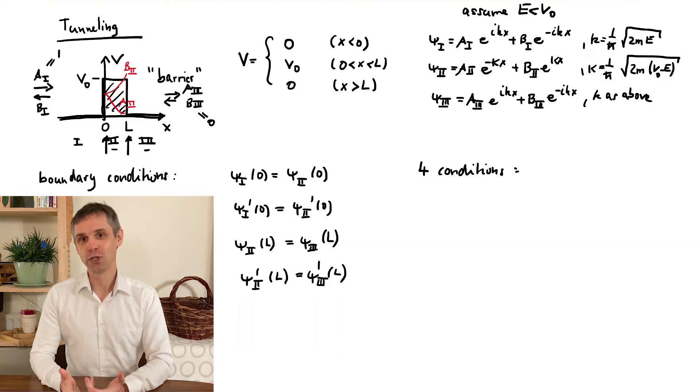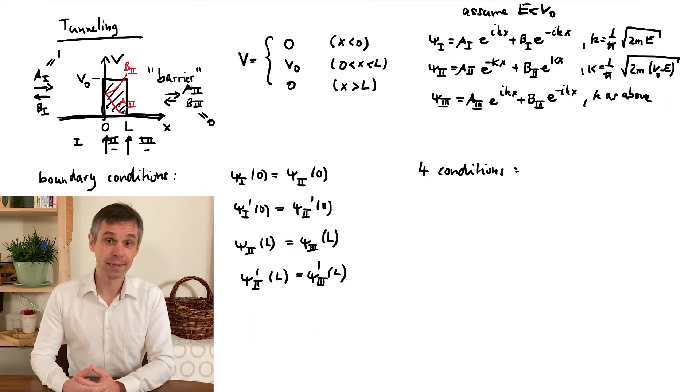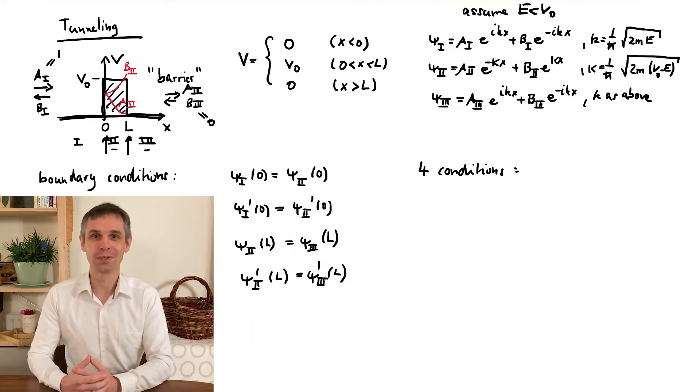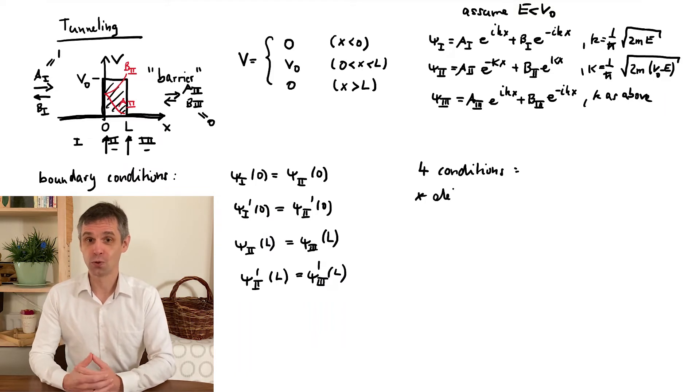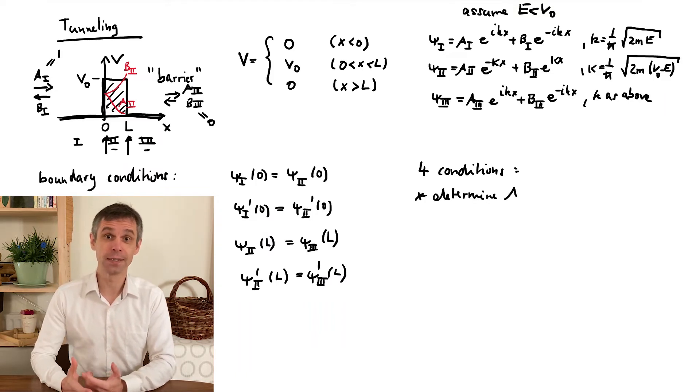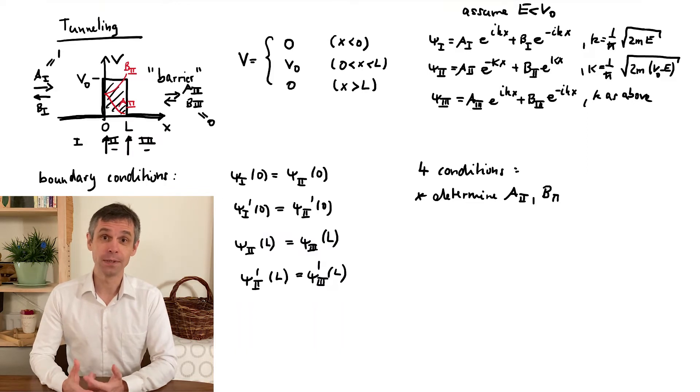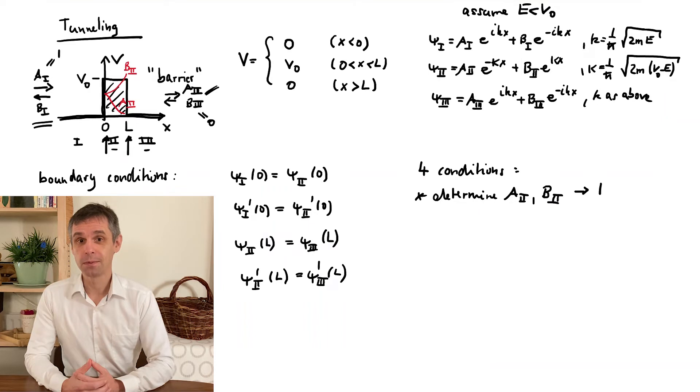The following steps are really just algebraic manipulations. It isn't very instructive to use the time here in these videos, but it is a really good little exercise. One way to do this is to first use two conditions to eliminate the coefficients in the barrier, a2 and b2, and then to use the remaining ones to work out b1 and a3.